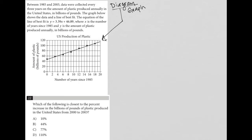The information provided up here, which we would have seen for question 21, basically just describes what we can see in the graph. Our x-axis here is number of years since 1985, our y-axis is amount of plastic in billions of pounds, and we're discussing U.S. production of plastic over those years.